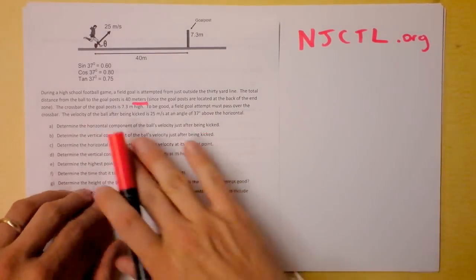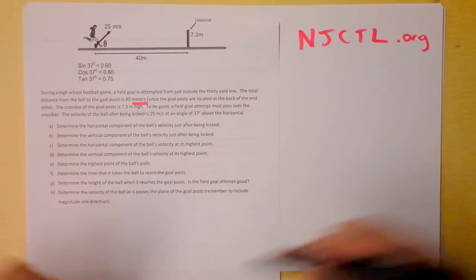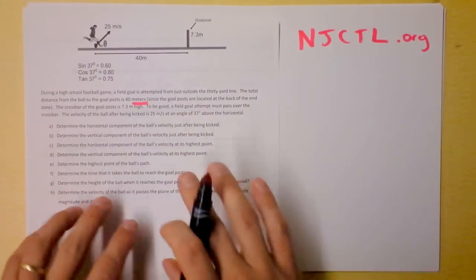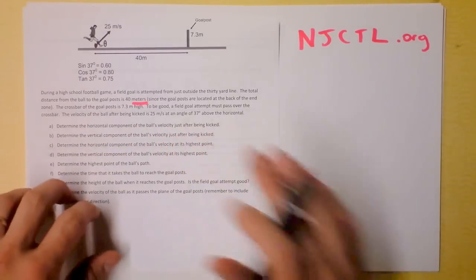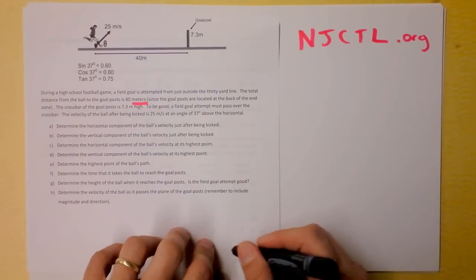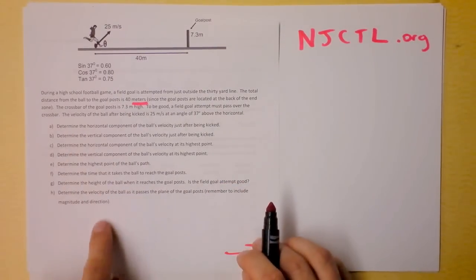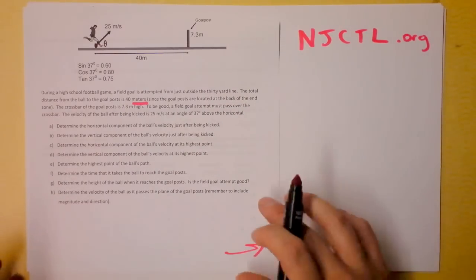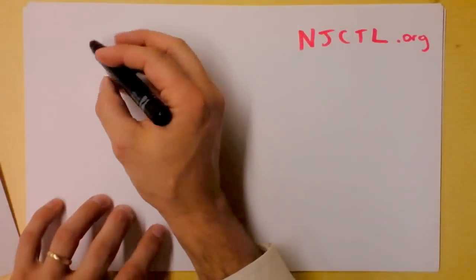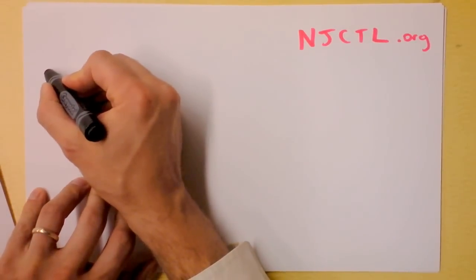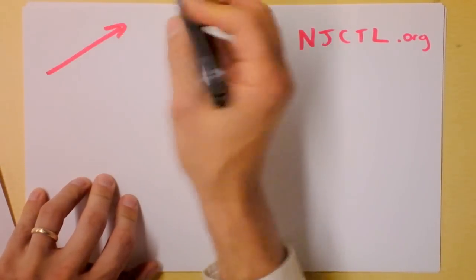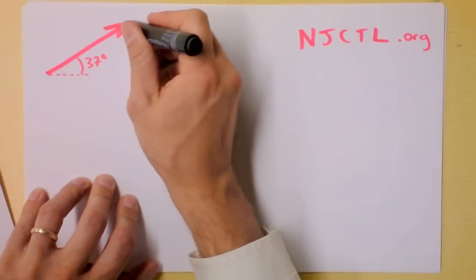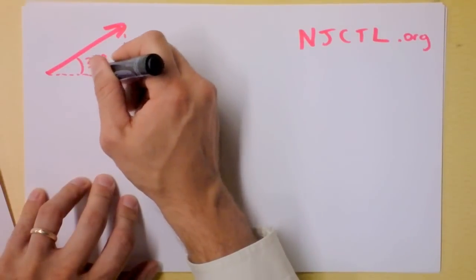Before reading any of the questions, I know I need to draw my initial velocity vector. I'm going to take the problems away and bring them back only when needed. I'll take this initial velocity vector — 37 degrees above the horizontal — and resolve it, because the velocity in the x direction and the velocity in the y direction behave very differently. One of them will be changing and the other will not.